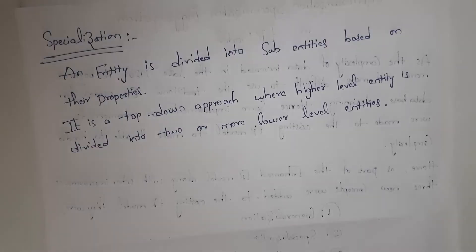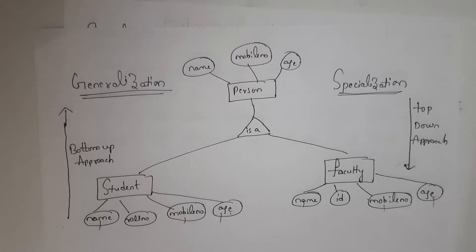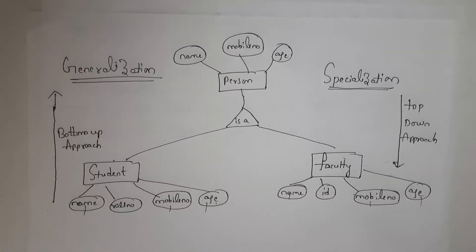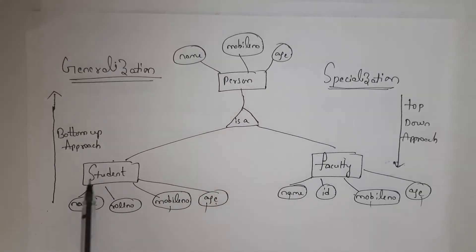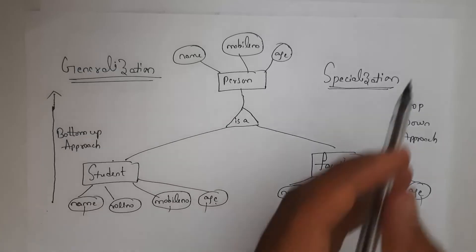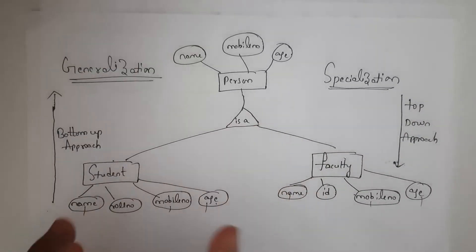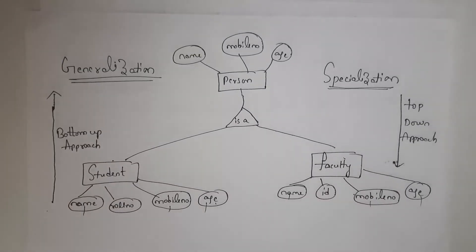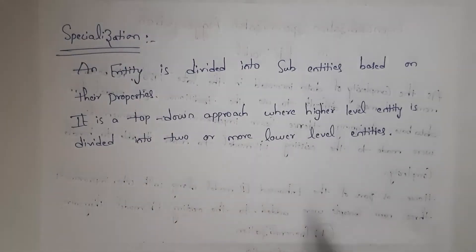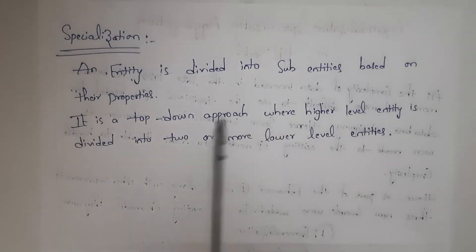Next, I will explain what specialization is. Specialization is the opposite of generalization. In generalization, we combine two entities to form a single entity. But in specialization, we divide a single entity into sub-entities. For example, there is one person entity containing name, mobile number, and age. I will divide this person entity into two sub-entities: student and faculty. An entity is divided into sub-entities based on their properties. It is a top-down approach where a higher-level entity is divided into two lower-level entities.